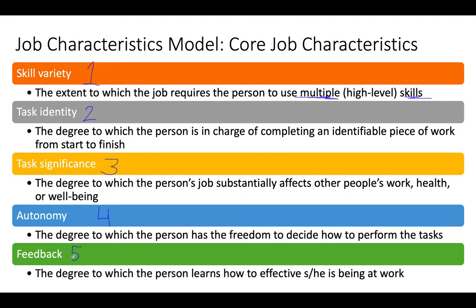Fifth is feedback. We want to know if we are going in the right direction, and if not, we need feedback so we can correct course and execute tasks and projects correctly. This is the degree to which the person learns how effective he or she is being at work. A lot of the time that feedback comes from the manager, but job characteristics theory also says it can come from the job itself — for example, if you work in a restaurant, your customers give you that feedback.